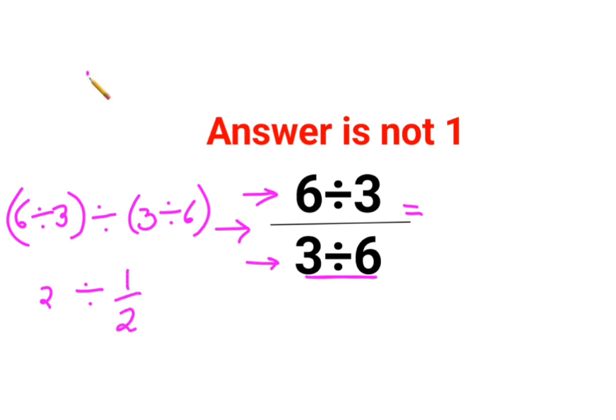Now whenever there is a division involved with fractions, you need to follow the rule of KCF where K stands for keeping the first number as it is. C stands for changing the division sign to multiplication. F stands for flipping or taking reciprocal of 1 upon 2 which is just 2.